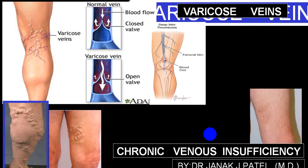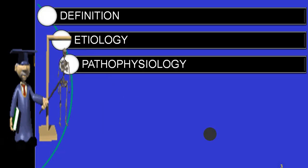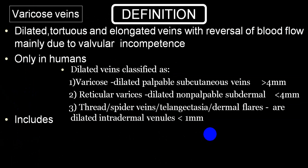We'll be discussing in two separate parts: varicose vein and chronic venous insufficiency. Varicose vein is a dilated, tortuous, and elongated vein with reversal of blood flow, mainly due to valvular incompetence. In human beings, dilated veins can be classified as varicose vein — dilated palpable subcutaneous vein more than four millimeters — reticular varices, which are dilated non-palpable subdermal veins less than four millimeters, and spider veins or telangiectasia, which are dilated intradermal venules less than one millimeter.